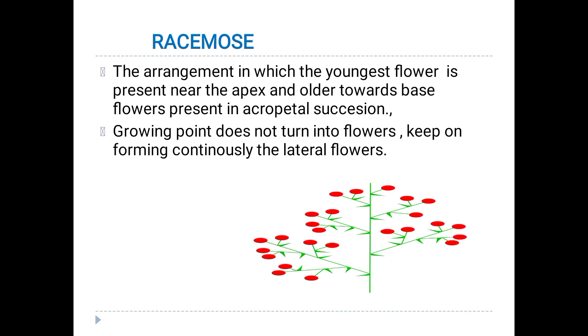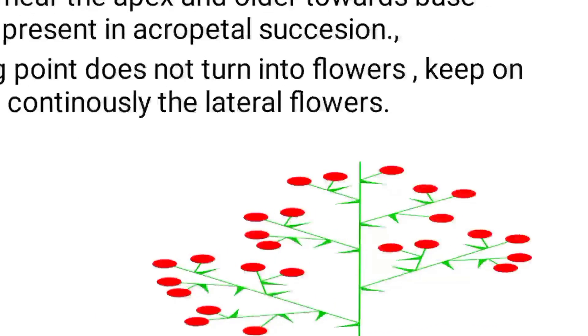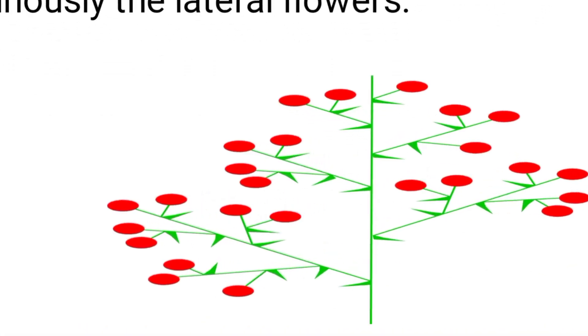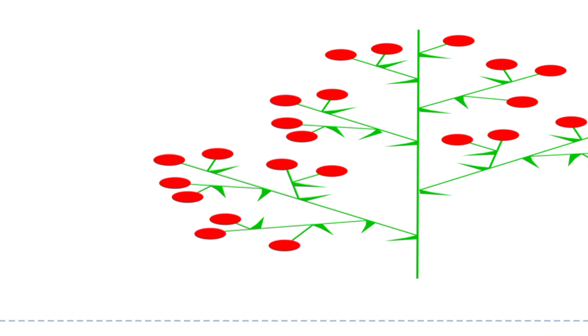Now let's talk about cymose inflorescence. Look at this structure carefully. This is the axis. Here the terminal does not continue to any flower — it means it has cymose inflorescence, because the terminal apex bears a flower and stops further growth.